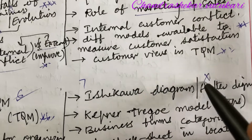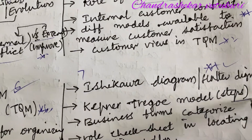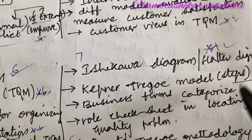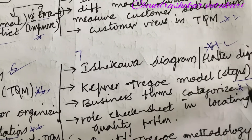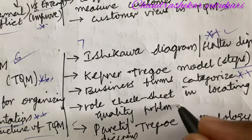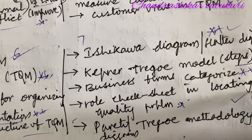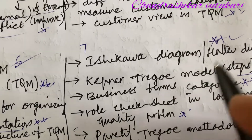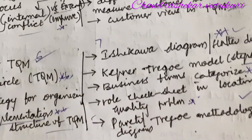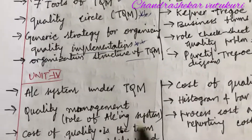Organizing structure of TQM is set to be the sixth and seventh question. Leaker's square diagram as well as scatter diagram — out of these two you'll be getting one question. PDCA model and the steps involved in it, and categorizing the different business forms, and the role of checklist sheet in locating quality problems, as well as Pareto and Taguchi methodology is also set to be the topmost question.